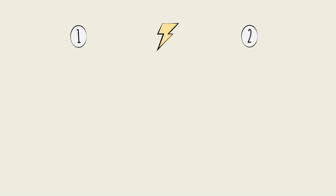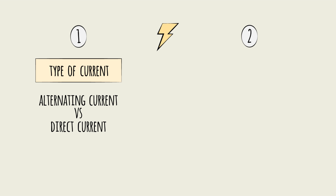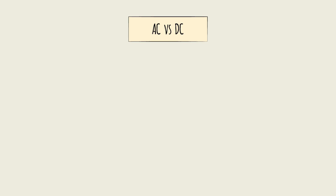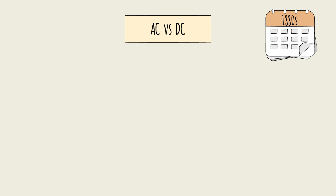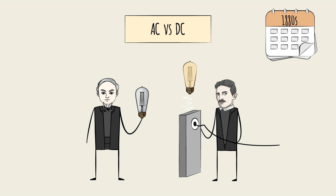Two factors impact how cost-effectively electricity is transmitted: the type of current — alternating current or direct current — and the level of voltage, whether high or low voltage. The former was behind a historic battle in the 1880s between two of the names we have to thank for electricity: Nikola Tesla and Thomas Edison.